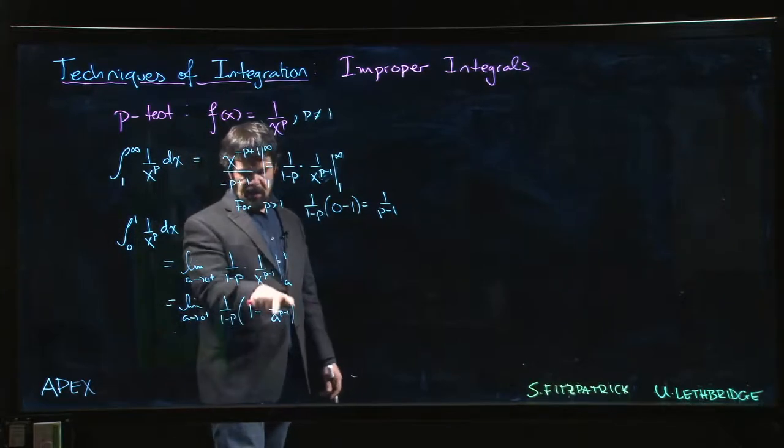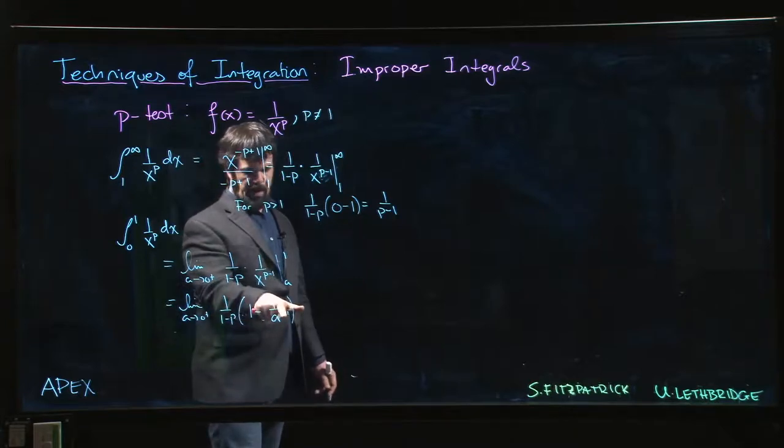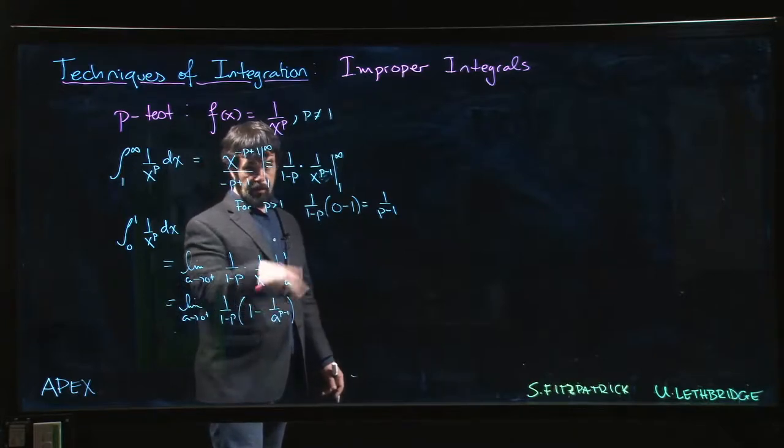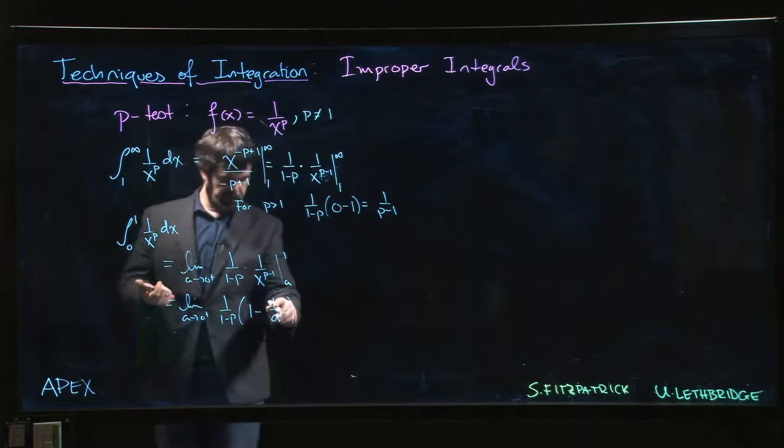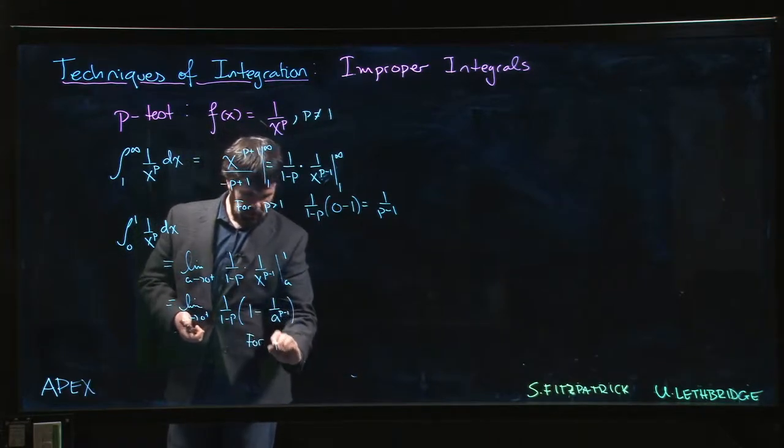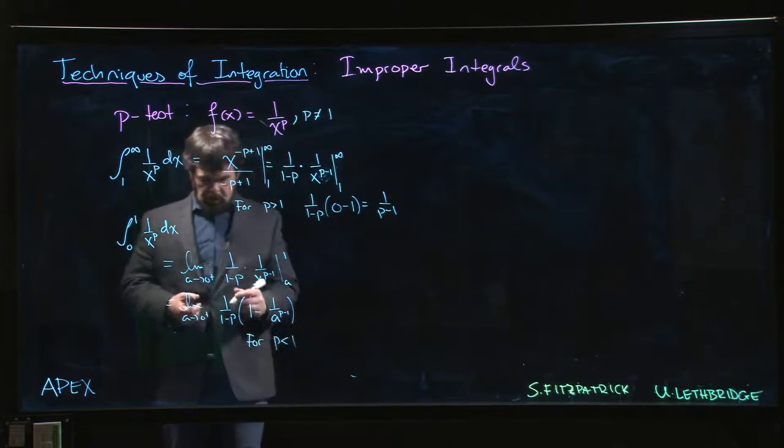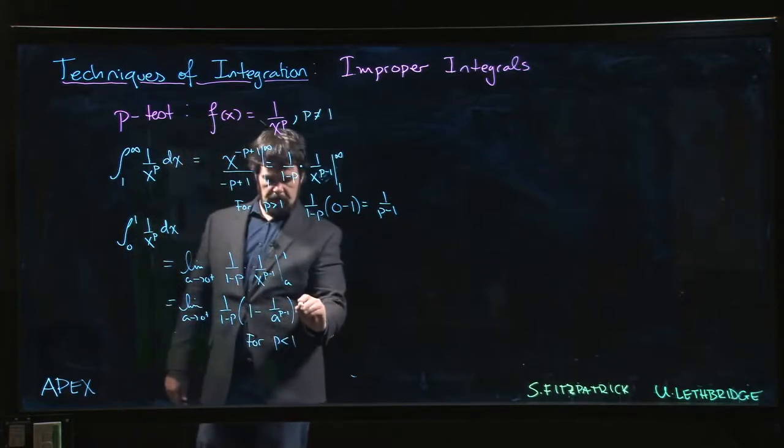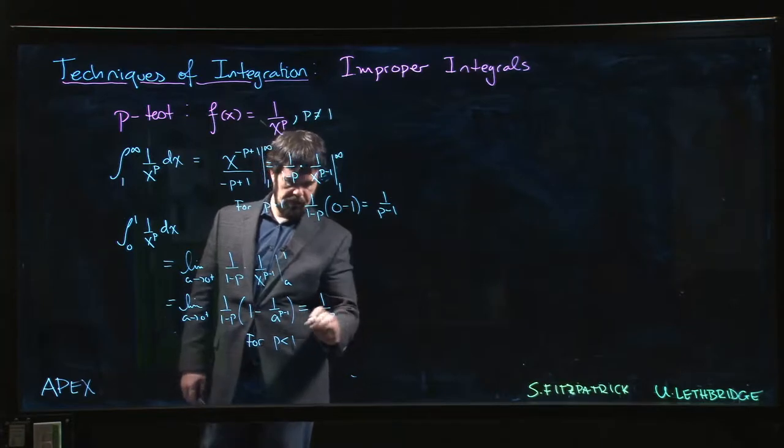Now, if I want to get a value here, then I need p minus 1 to be negative so that this is actually something in the numerator. And then it's going to go to 0. So I want p minus 1 to be negative. So I need p to be less than 1. If p is less than 1, then I'm going to get 1 over 1 minus p.